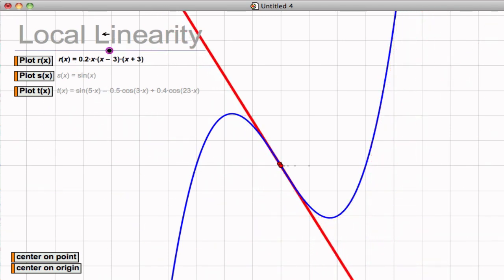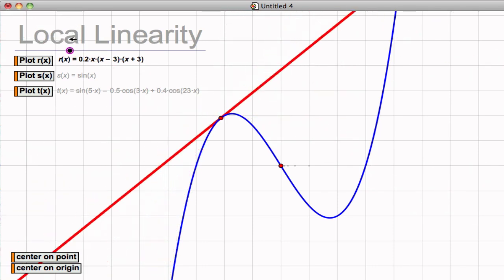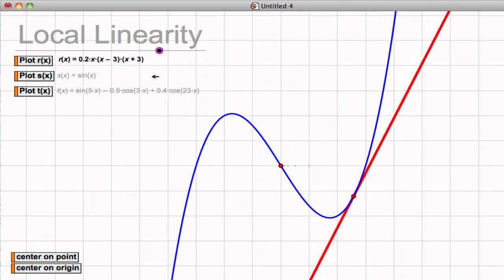And local linearity says that the tangent line acts like the function, or that the function acts like the tangent line, and we need to discover what's meant by this.